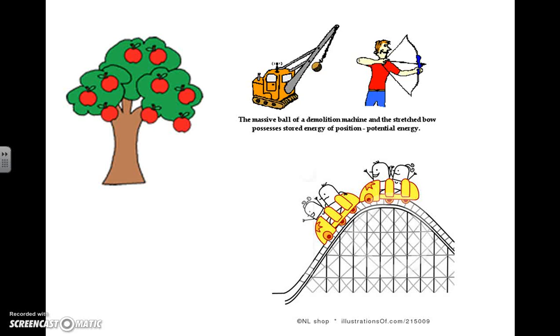Bottom right, I also have a roller coaster, some little characters riding a roller coaster. You'll notice they're at the top of the hill, just starting to head downward. And this image would represent a system that contains mostly potential energy at this point, because the height is very high above the ground.